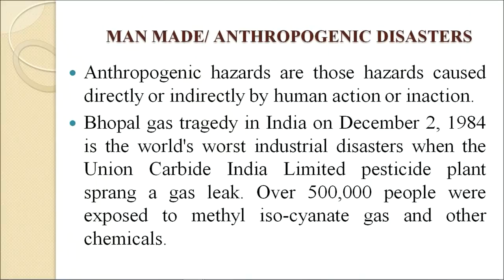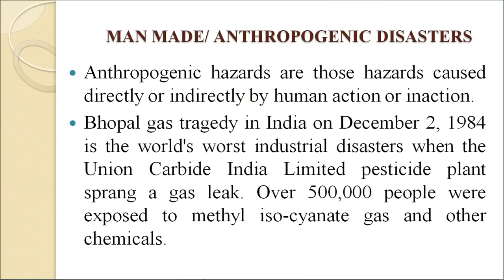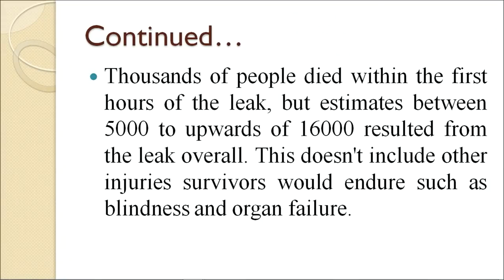Now we come to man-made or anthropogenic disasters. Anthropogenic hazards are those caused directly or indirectly by human action or inaction. The Bhopal gas tragedy in India on December 2, 1984 is the world's worst industrial disaster. When the Union Carbide India Limited pesticide plant sprang a gas leak, over 5 lakh people were exposed to methyl isocyanate gas and other chemicals. Thousands died within the first hour; estimates range between 5,000 to upward of 16,000 deaths from the leak overall.